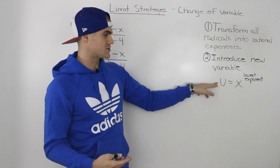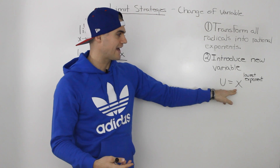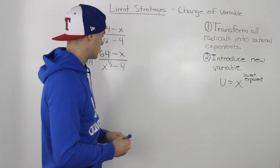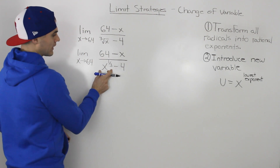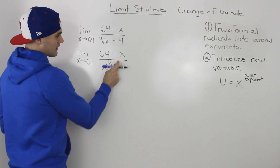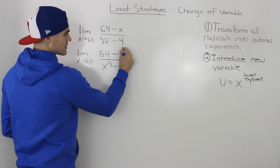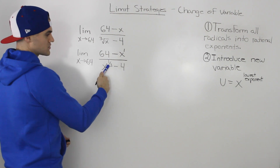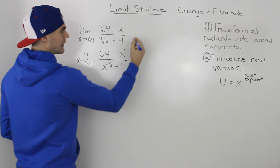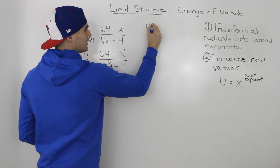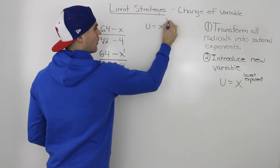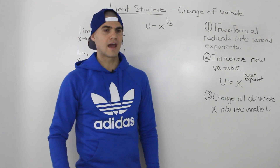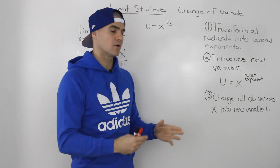Step two: introduce a new variable — hence the name 'change of variable.' We introduce the variable u, and we always let u equal X to the power of the lowest exponent. In our example, we have X to the power of 1/3 and X to the power of 1. The lowest exponent is 1/3, so we let u equal X to the power of 1/3.